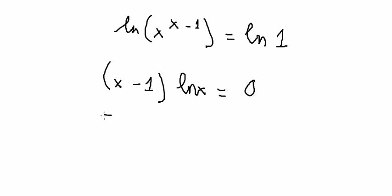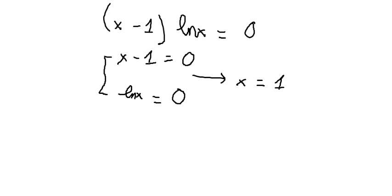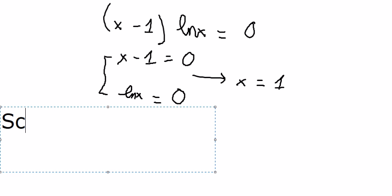So we have two sub-cases: s minus 1 equals zero, or ln s equals zero. Both give us s equals one. So our first solution is s equals one. Now let's go to scenario number two.